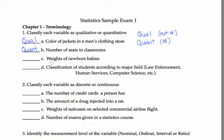Weights of newborn babies. That's a number. Quantitative. Classification of students. Law enforcement, human services, computer science. That's not a number. That's quality. Something about the students. So that's qualitative.